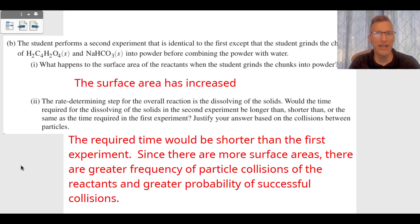Then we go to problem B. Problem B says the student performs a second experiment that's identical to the first except the student grinds the chunks of solid into powder. In number one, what happens to the surface area of the reactants? The surface area has increased when you've ground it into chunks of powder.